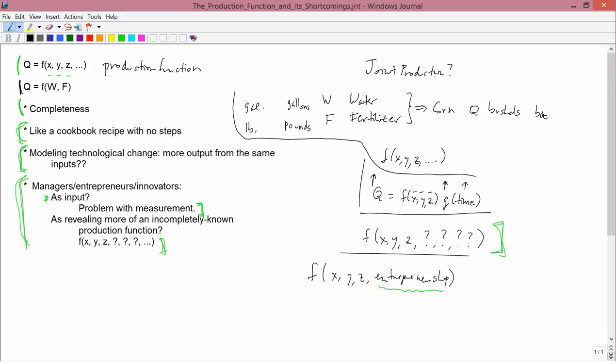Another way of thinking about how to model managers, entrepreneurs, and innovators is this. This last point here: you model them as revealing more of an incompletely known production function. So we have a production function that's incompletely known, as I wrote here. And perhaps it's the role of an entrepreneur to reveal more of that production function. So before this entrepreneur did his work, everybody just thought the production function was f of x, y, and z. After the entrepreneur works, he's shown everybody that x, y, z, and let's call it a, that a is a new kind of input you can use. And if you use that input, then you have a completely different set of possibilities.